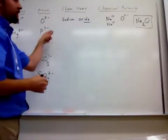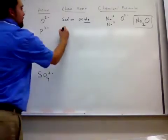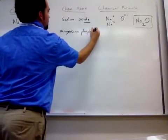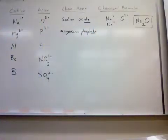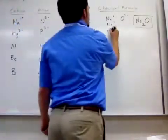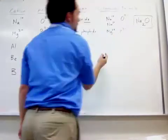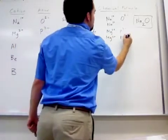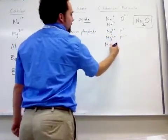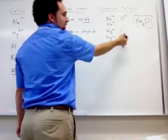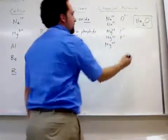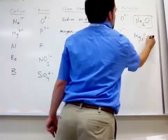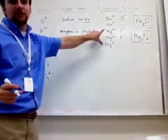So now we have a positive two and negative three charge. The name is going to be magnesium phosphide — because it's ionic, we add -ide. Now we balance the charges: Mg²⁺ and P³⁻. We need more magnesium — now we have positive four and negative three. We need another phosphorus — now negative six and positive four. We need another magnesium to get positive six and negative six, which equals zero. So the formula is Mg₃P₂.